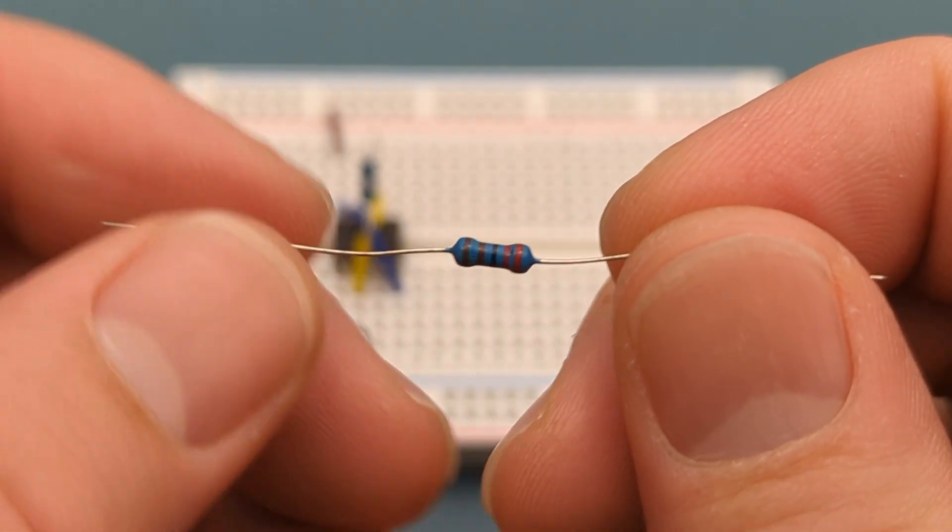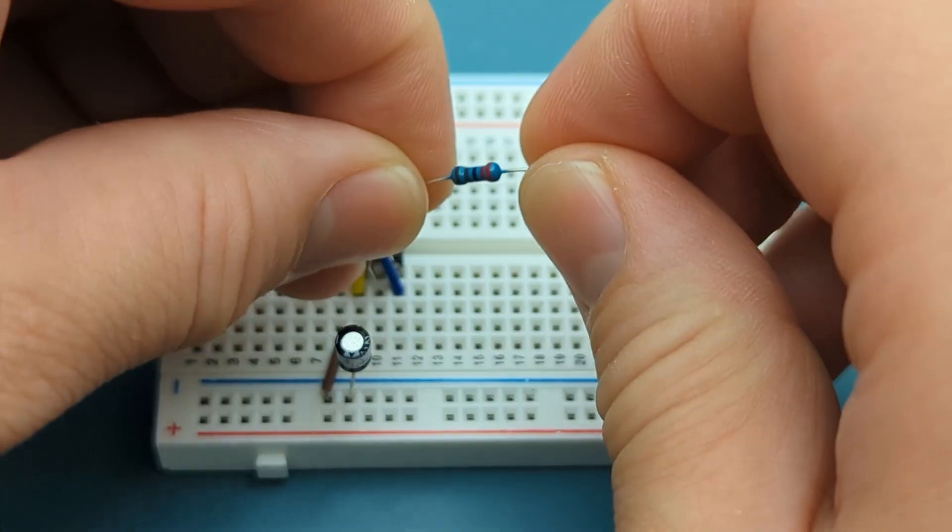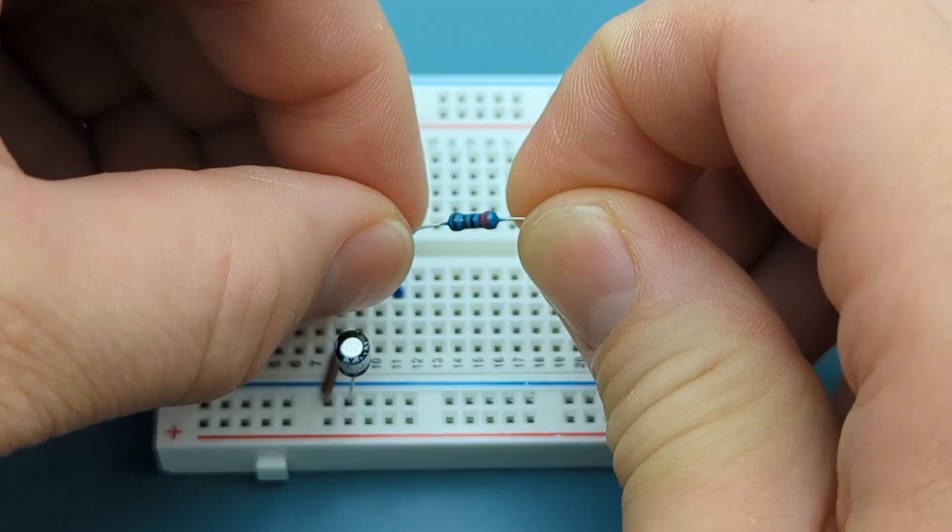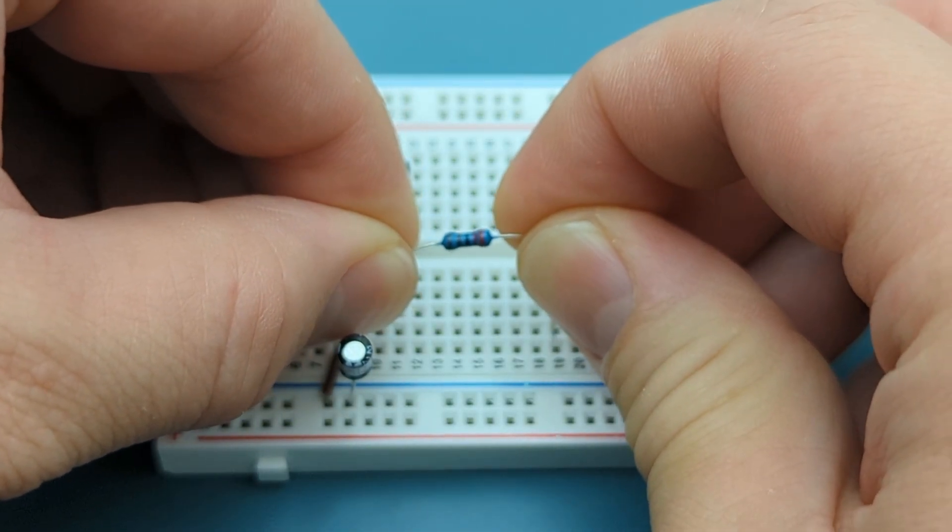Bend the ends of a 2200-ohm resistor. Insert the 2200-ohm resistor into pin 3 or output and a few rows below the 555 timer.